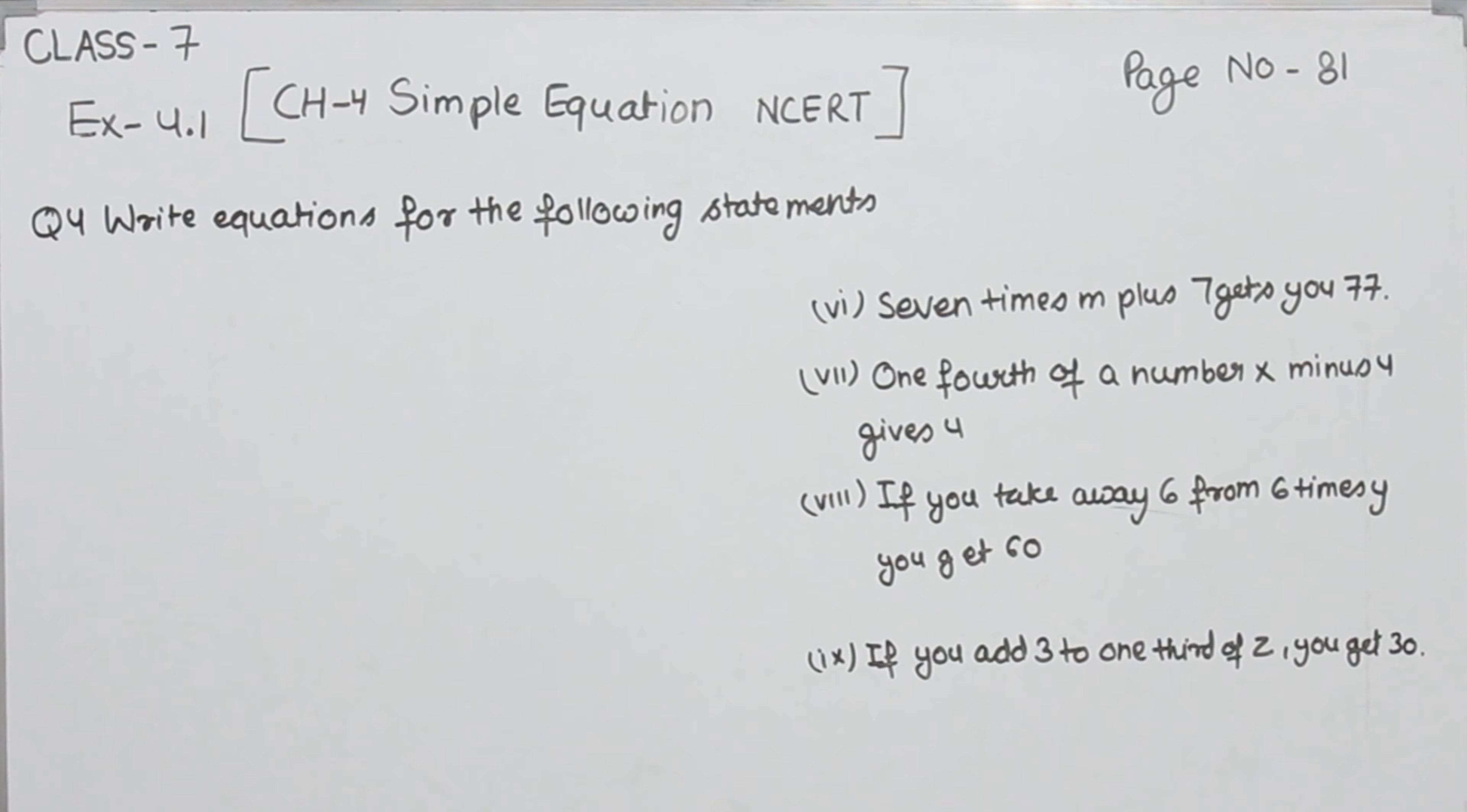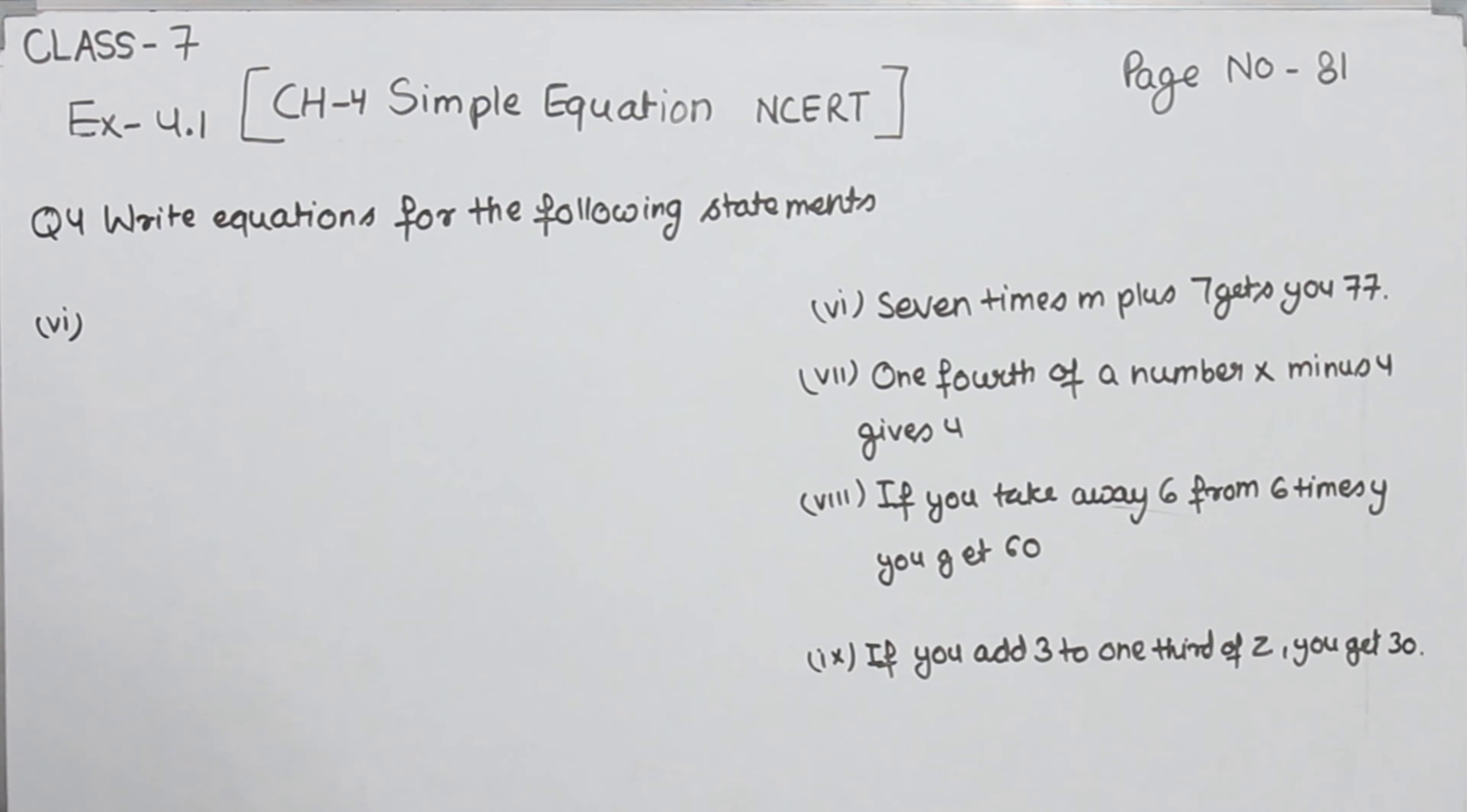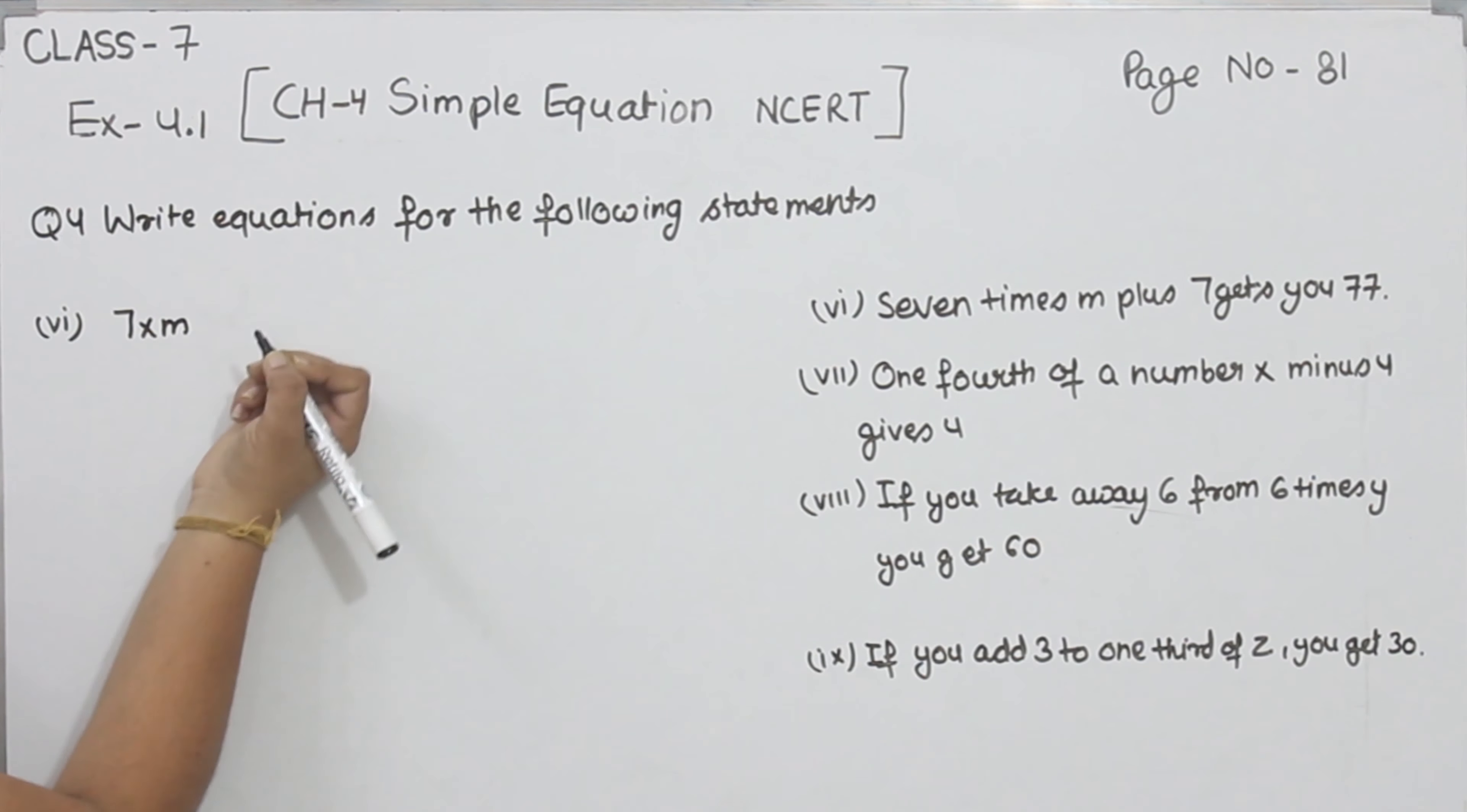Now start with part 6. In part 6, 7 times m plus 7 gets you 77. So 7 times m means 7 multiplied by m plus 7 is equal to 77. That is 7m plus 7 is equal to 77.